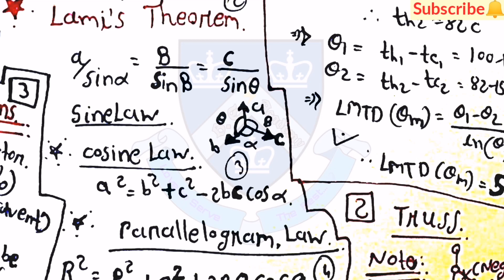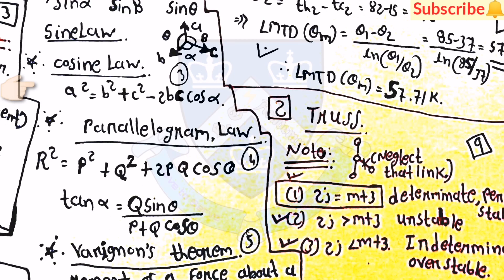Then after, the next one is the cosine law: a squared is equal to b squared plus c squared minus 2bc cos alpha. Then after, the parallelogram law: R squared is equal to p squared plus q squared plus 2pq cos theta, and tan alpha is equal to q sin theta divided by p plus q cos theta.